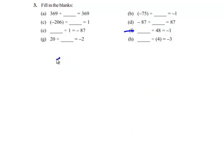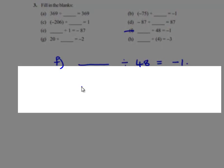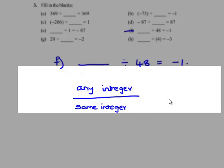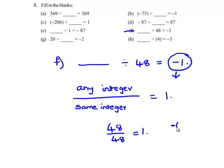We will see the next problem. Some integer divided by 48 gives negative 1. We know that when 48 is divided by 48, this gives the value 1. But in the answer we can see that we have a negative sign, which implies we have to divide two integers having opposite signs. Therefore, when negative 48 is divided by 48, we get negative 1. Therefore, the answer is negative 48.